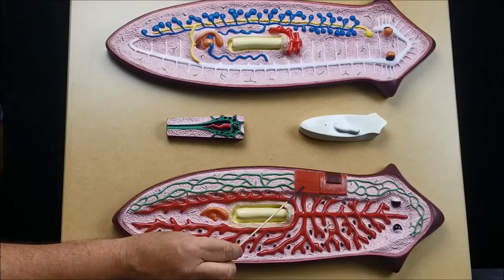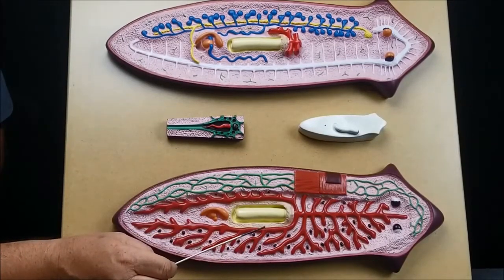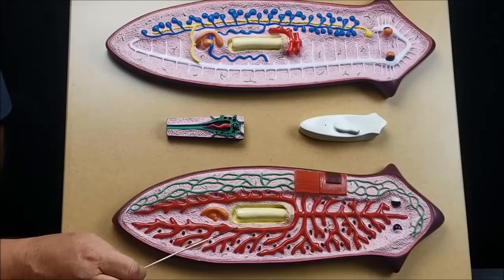This is a longitudinal muscle, that's a circular muscle. All this red webbing here is the gastrovascular cavity that leads from the pharynx, and then there's the mouth once again.